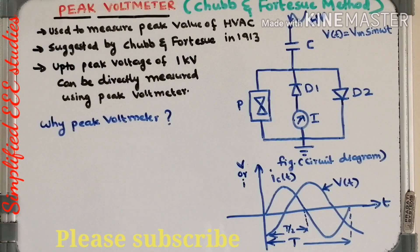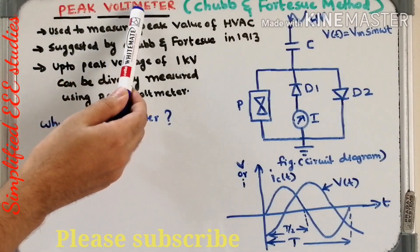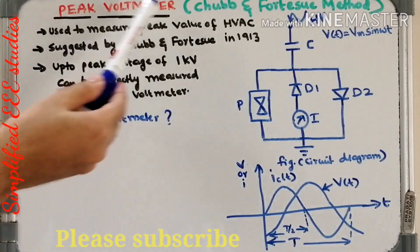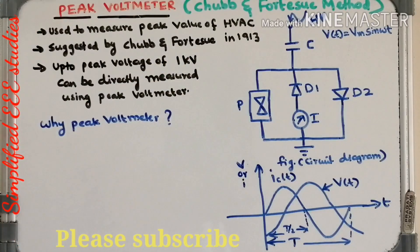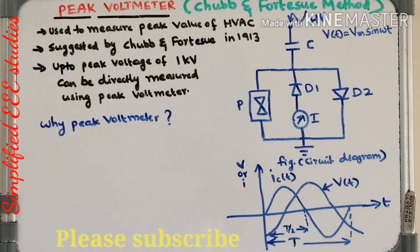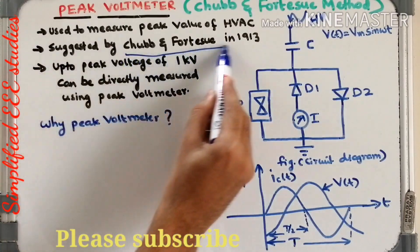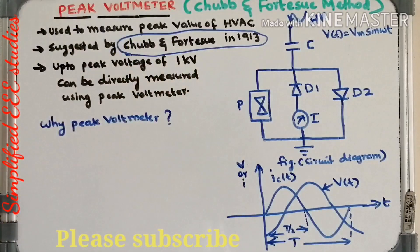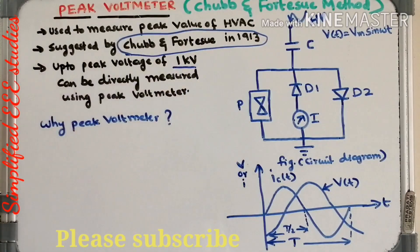Dear all, in this lecture video I will be discussing the technical details of the peak voltmeter. The peak voltmeter is also known as the Chubb and Fortescue method. This method is mainly used to measure the peak value of high voltage AC. It was suggested by scientists Chubb and Fortescue, and in the year 1930 you can measure the peak value up to 1 kV directly. That is the peculiarity of this method.